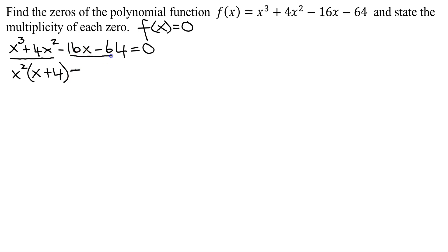Now what do the last two have in common? As 16 divides into 64 evenly, I can factor out a negative 16. If I factor a negative 16 out of -16x, it's just going to leave x. If I factor a negative 16 out of -64, it's going to leave +4.